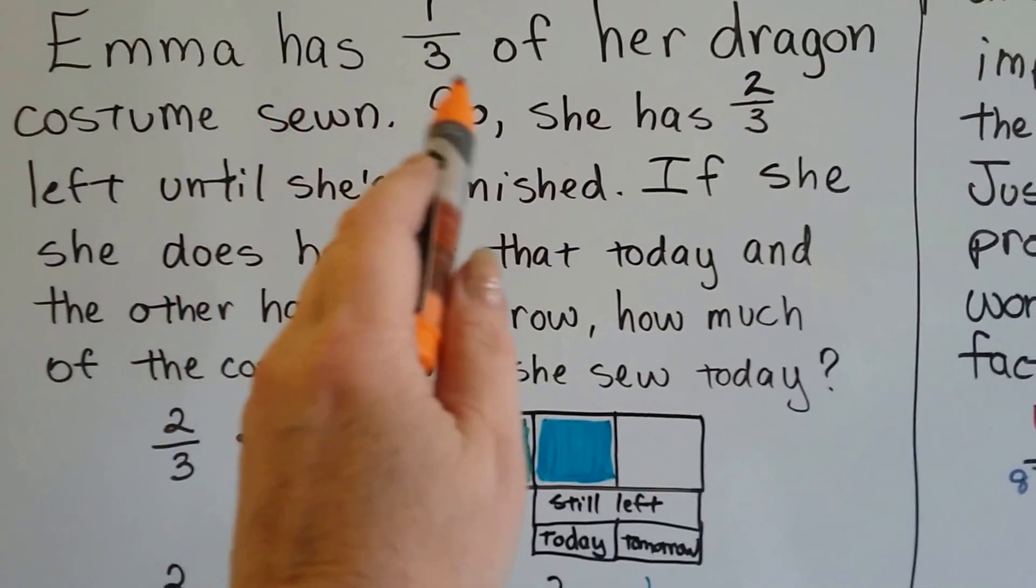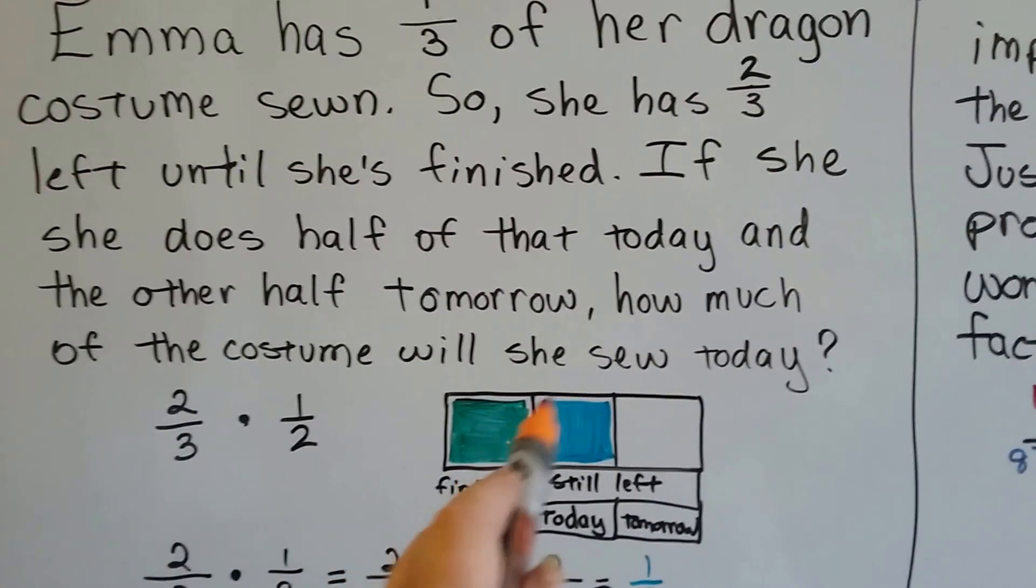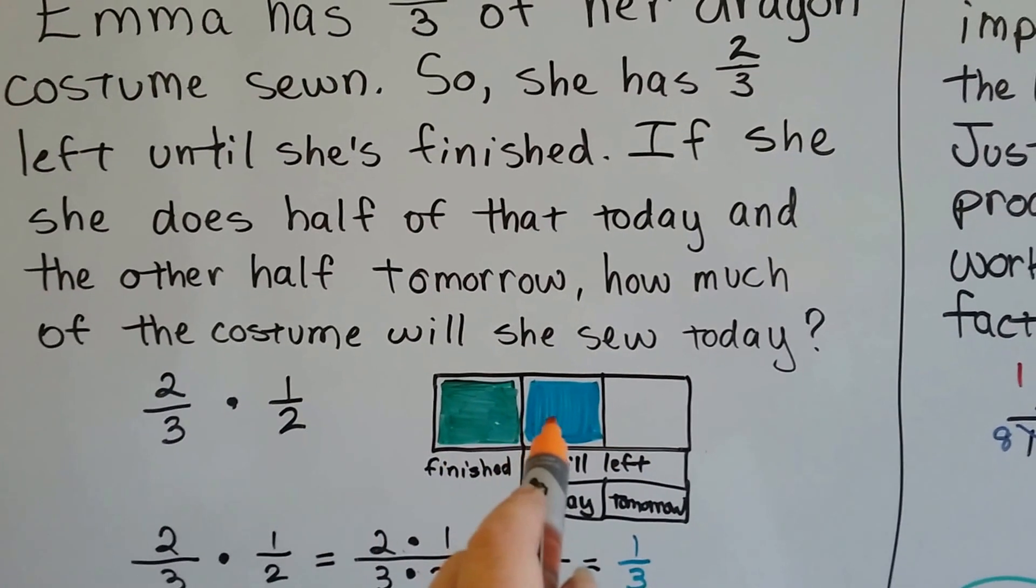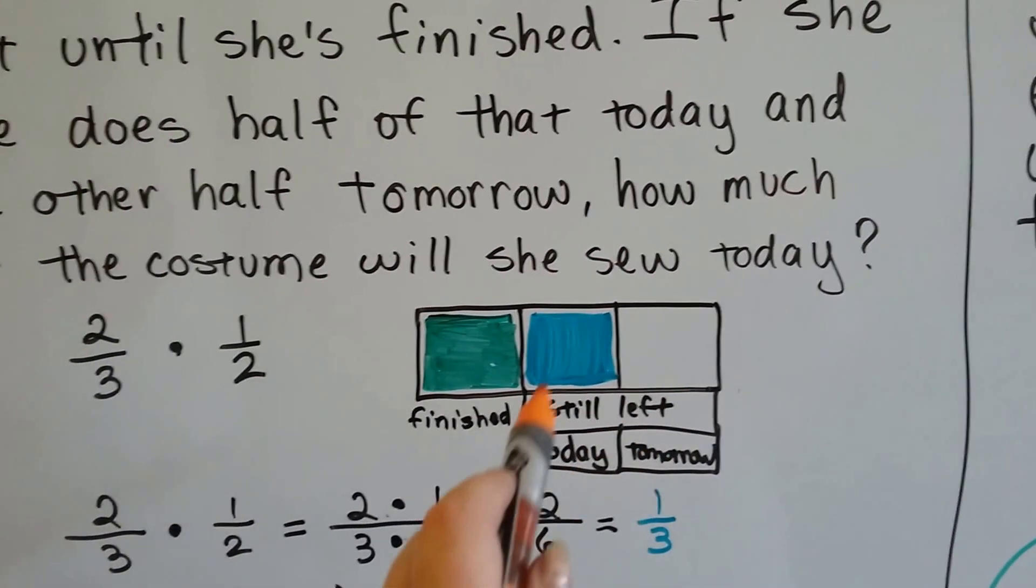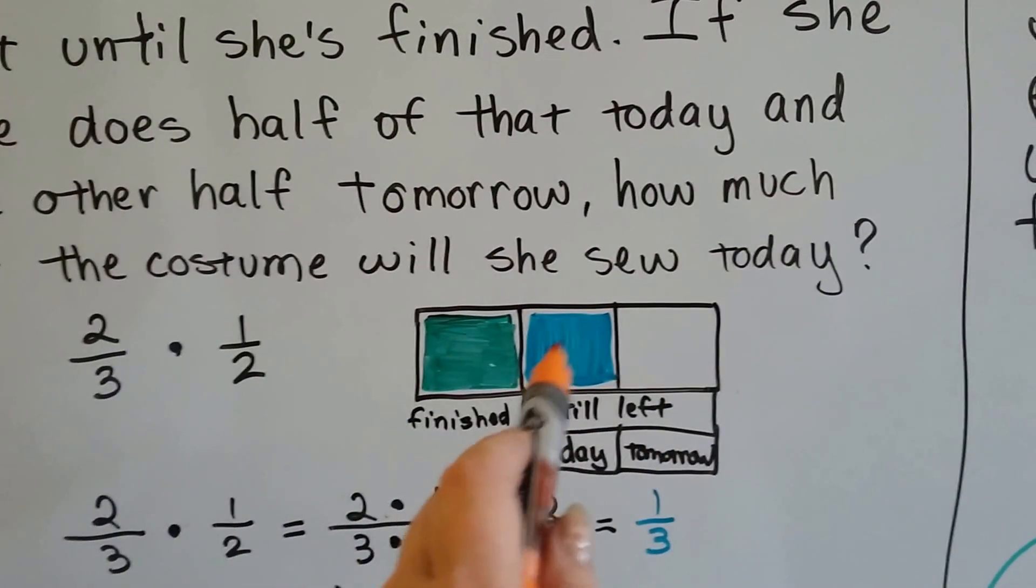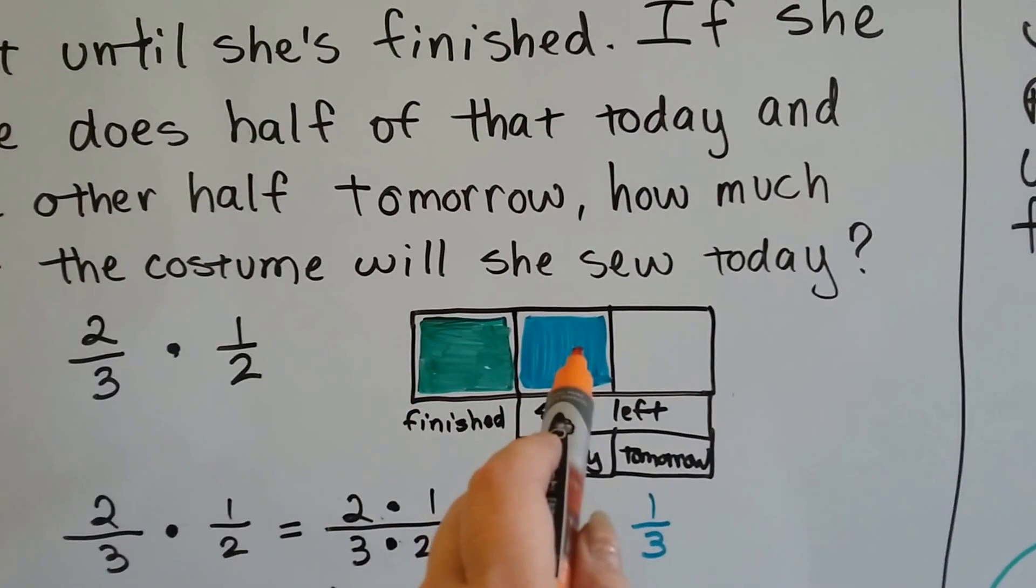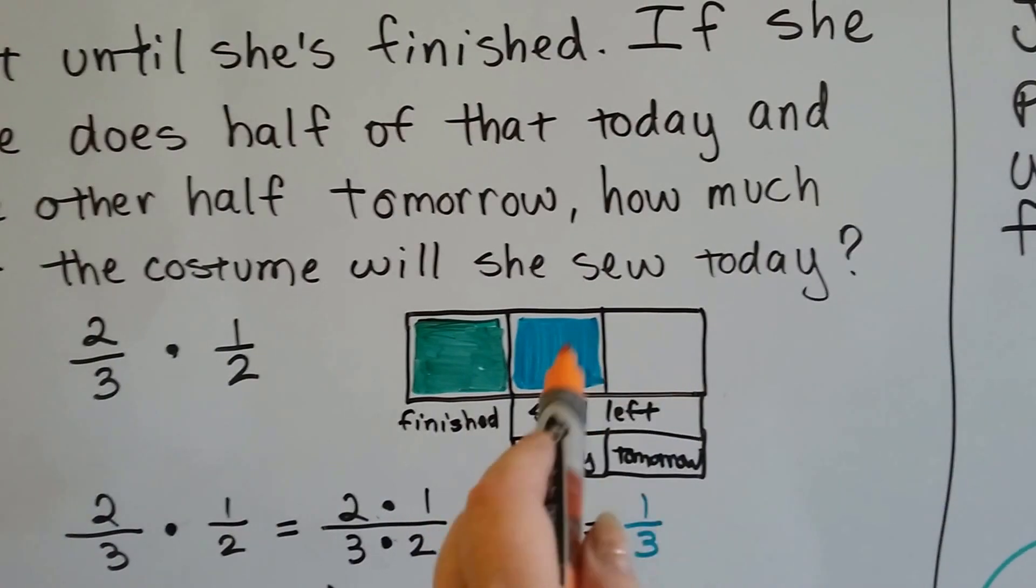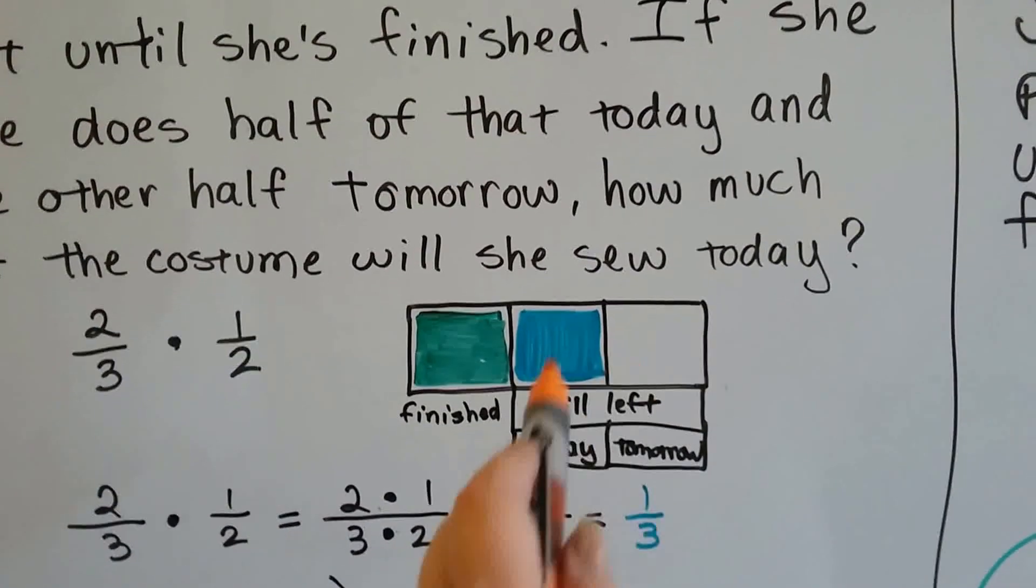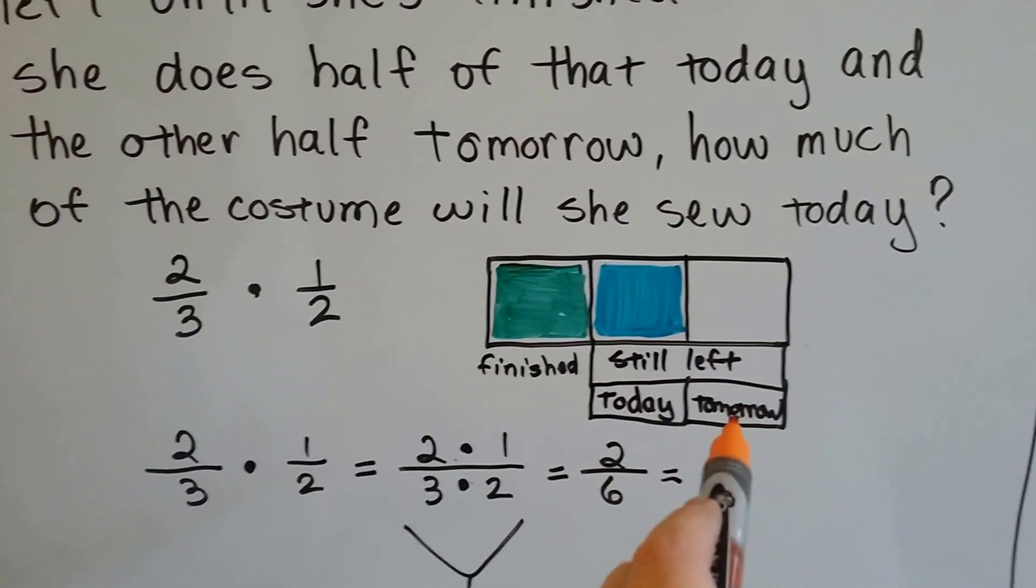Here's a drawing that's going to help you know the answer ahead of time. She's sewn one-third of her dragon costume already, so this is the part that's finished. She still has two-thirds left to go. If she does half today and half tomorrow, how much will she sew today? You can see that she'll have done a third yesterday, a third today, and a third tomorrow. Because the two-thirds that are left, if she does half of it, it's one-third.